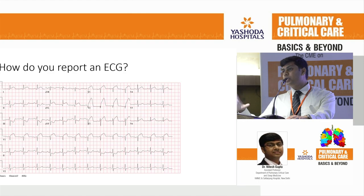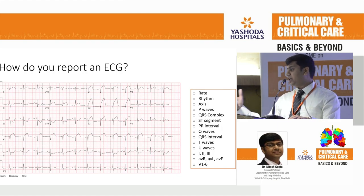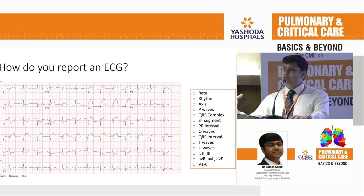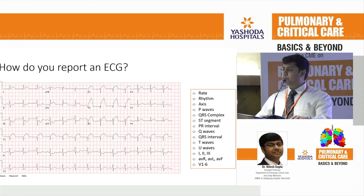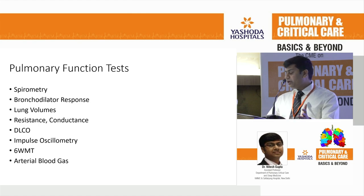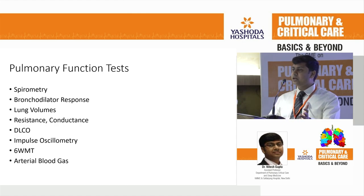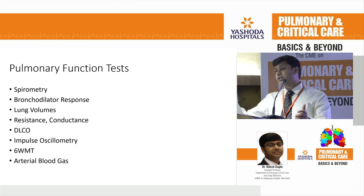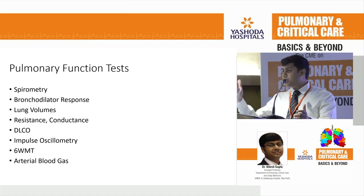But in a step-by-step ECG evaluation you mention rate, rhythm, axis, P waves, QRS, ST, PR interval, Q waves, T waves, U waves, and all leads V1 to V6. We are so used to seeing ECGs frequently that just by looking at the spectrum we can say ST elevation MI. Why doesn't the same happen with PFT? Pulmonary function tests are a spectrum of tests — spirometry, bronchodilator response, lung volumes, resistance and conductance using a body box, DLCO, impulse oscillometry, six-minute walk test, and arterial blood gas. Whenever there's a long question in your exams on PFTs, you must mention something about all these points.